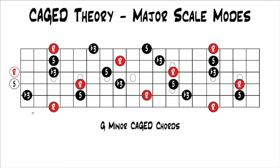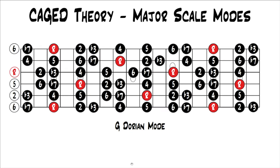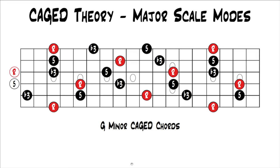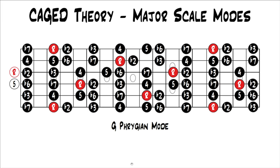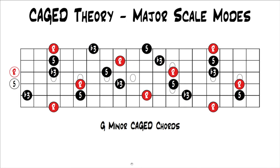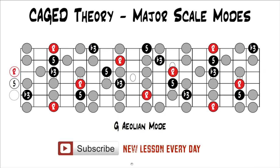Quickly with the minor CAGED chords: here is your G minor shape, your E minor shape, your D minor shape, your C minor shape, your A minor shape, and then you're back at G minor one octave higher. Now we can take these minor CAGED chords and look at them within the Dorian mode — here's the G Dorian mode with all the minor CAGED chords highlighted. We can do the exact same thing with the Phrygian mode — here's G Phrygian with all the G minor triads within it. And same again with the G Aeolian mode — here are all the G minor triads within the Aeolian mode.